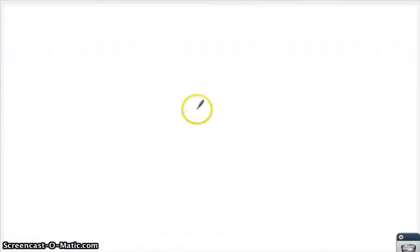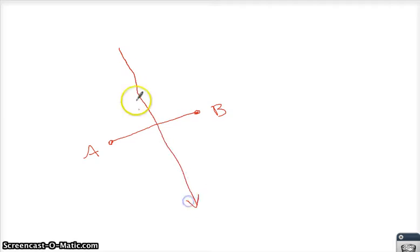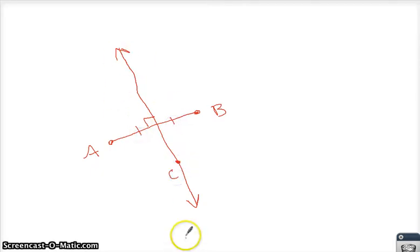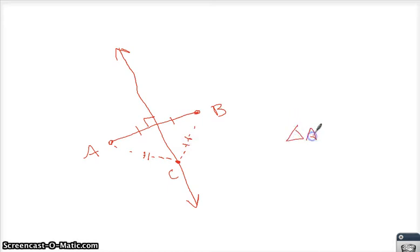Let me draw this so it makes more sense. We have a segment of some random length, distance A to B. Then we come along and say, here's a line that is the perpendicular bisector — so it goes through here perpendicularly. Then if I pick any point on here, this point is the same distance from A as it is from B. This little space to B is the same length as the space to A.